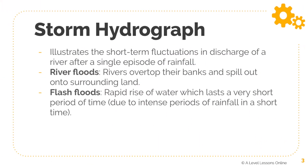The storm hydrograph illustrates the short-term fluctuations in discharge of a river after a single episode of rainfall. This single episode could span a few days of rainfall, but it covers only a certain short period of time.